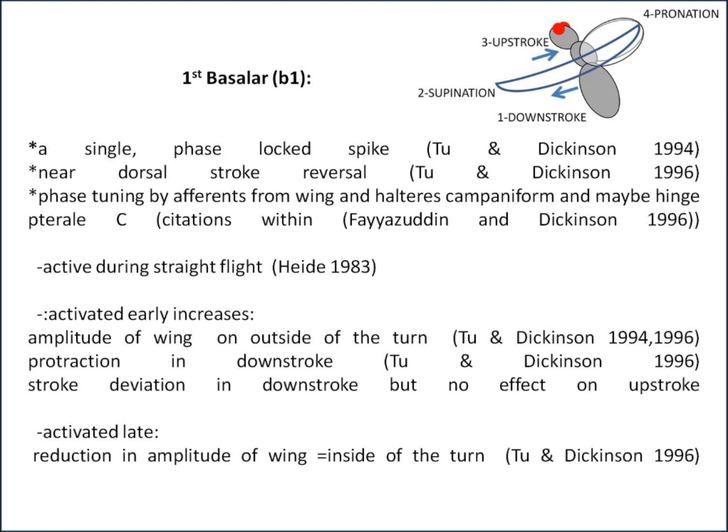Specifically, if B1 is activated early, it increases the amplitude of that wing. Keep in mind a fly has two wings, so each has its own basilar muscle. A change in the activation time — so activated early — causes an increase in the amplitude of that wing in particular, and the resulting effect is that the fly goes into a turn, but that wing is on the outside of the turn. There's also an increase in protraction in the downstroke and an increase in stroke deviation during the downstroke, but surprisingly no effect on the upstroke.